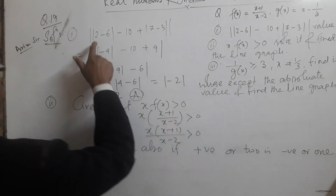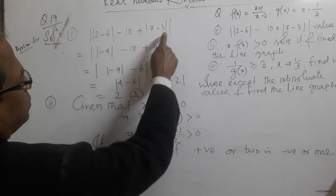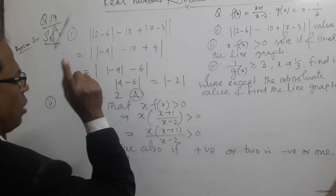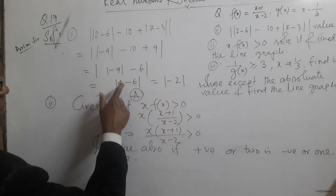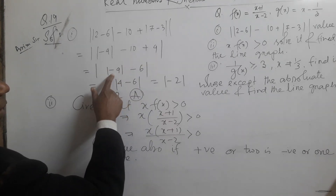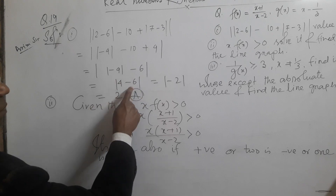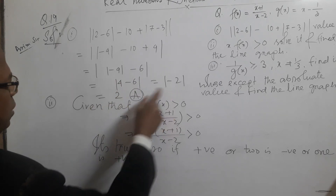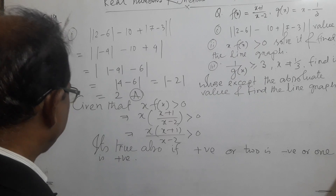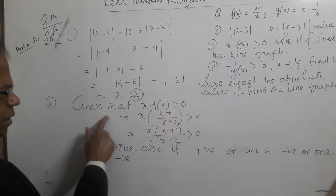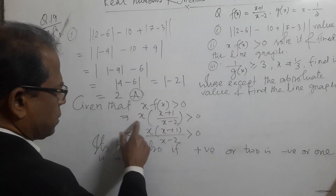Number one is solved. 2 minus 6 is minus 4, and the modulus of minus 4 is plus 4. Then minus 6 gives minus 2, and the modulus gives plus 2. That is the complete answer for number one.